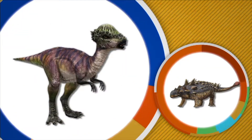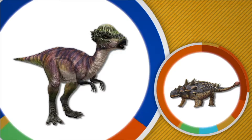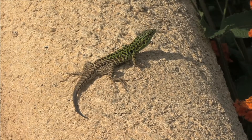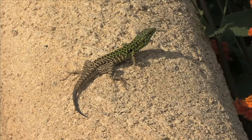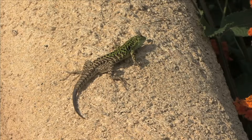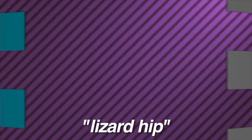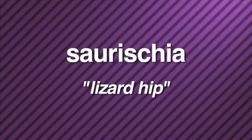The word dinosaur means 'terrible lizard,' but were all dinosaurs like lizards? Not really! Scientists have placed different dinosaurs into two different groups based on the structure of their hip. Some dinosaurs had hip bones similar to those of modern-day lizards, where their legs sprawled out from the sides, so scientists called them lizard-hipped. The scientific term for lizard-hipped is Saurischia.